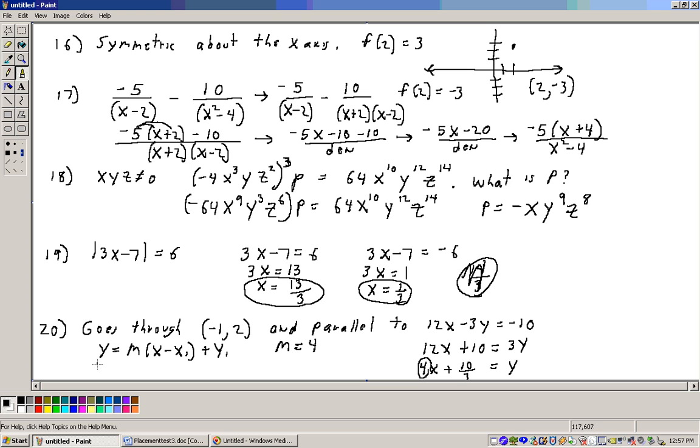So let's fill in what we have. We get y equals, the m is 4, 4 times x minus. The x1 is a minus 1, so it's going to be, see this is my x1, this is my y1. So it's going to be x minus a minus 1, which is x plus 1, plus y1, which is 2, so plus 2.